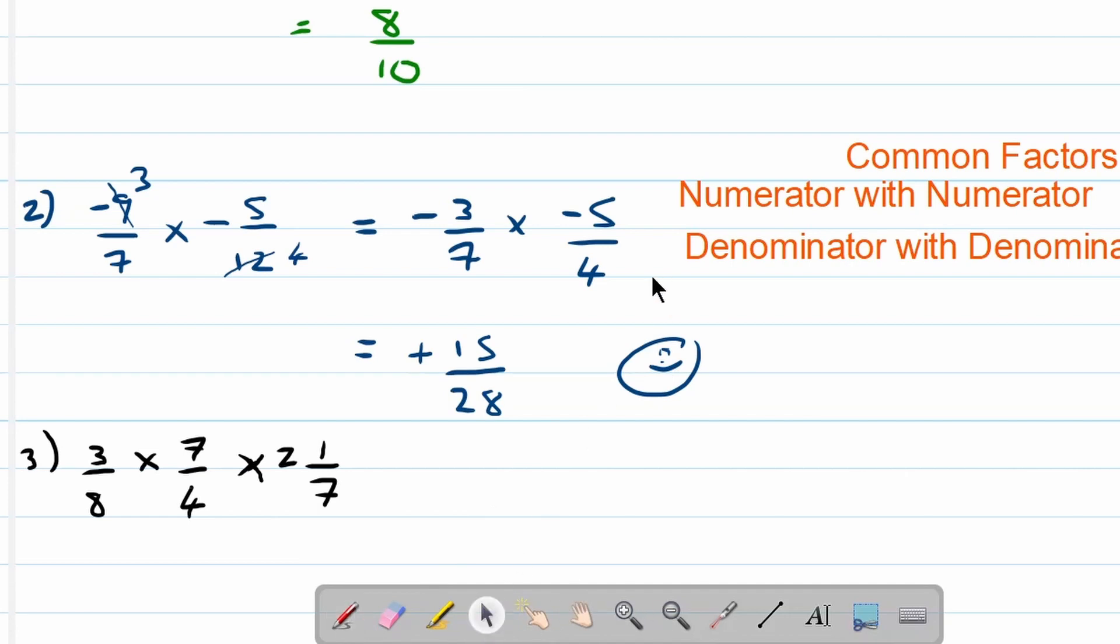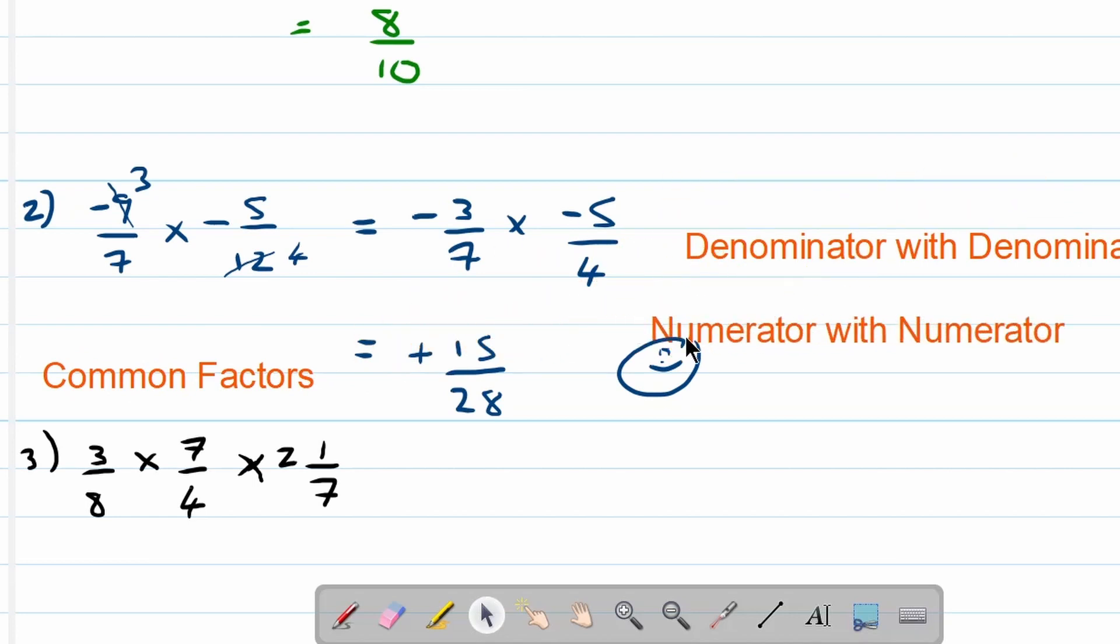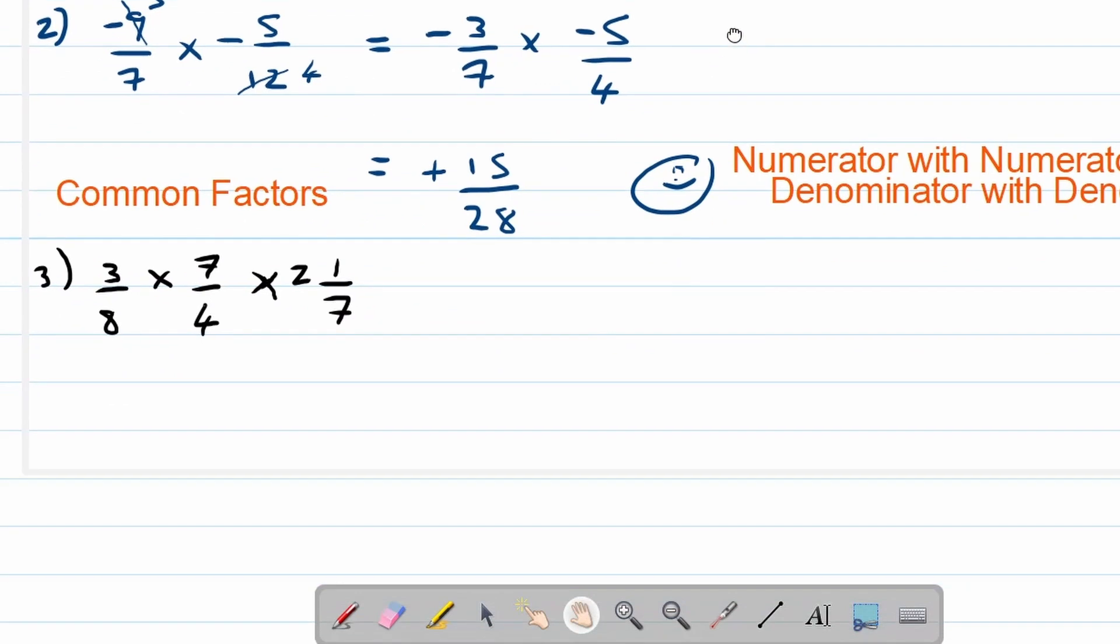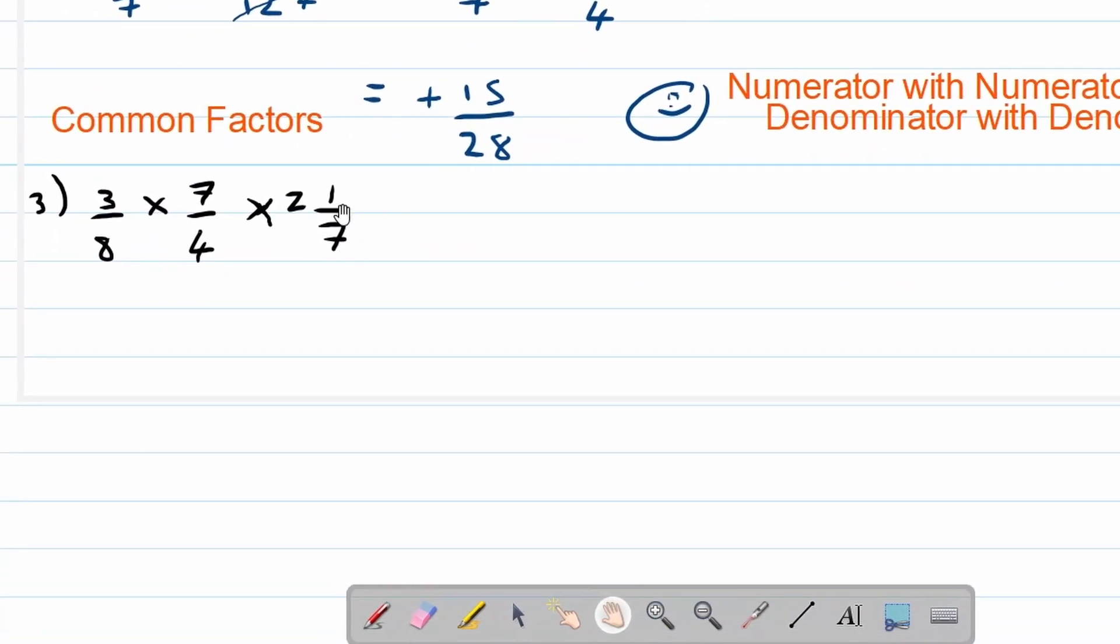Okay then final question. We're again going to look at our common factors. Then the numerator, then the denominator. But this one has a little bit of a twist in it. You see there we've got a mixed number. Do you see the mixed number right there? 2 and 1 over 7. So the first thing is we have to write that down as an improper fraction.